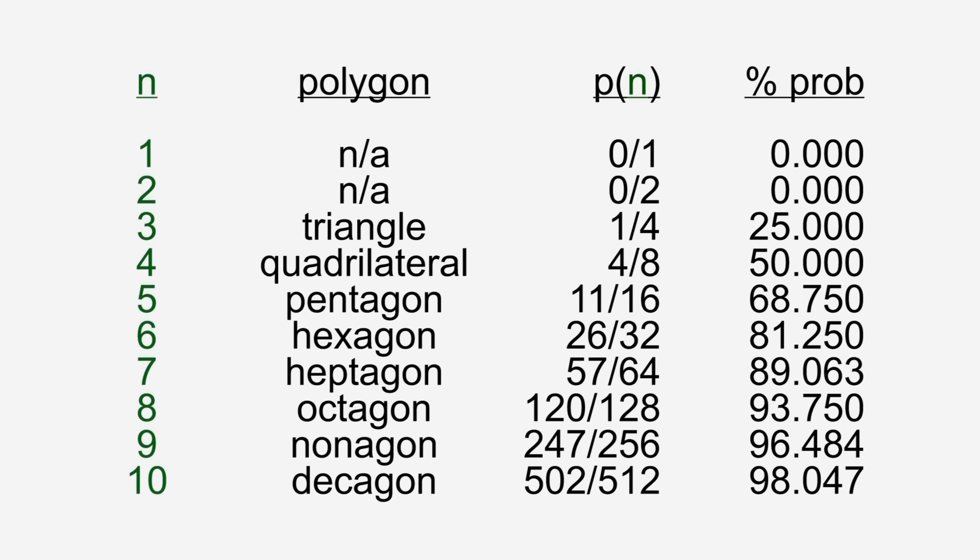Here are the probabilities of generating every n-sided polygon from 1 to 10. Some interesting things to note. There is no such thing as a one-sided or two-sided polygon. And our general formula accurately indicates there is zero probability of forming a polygon when n equals 1 or 2.